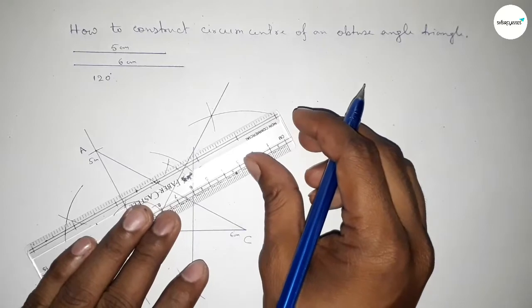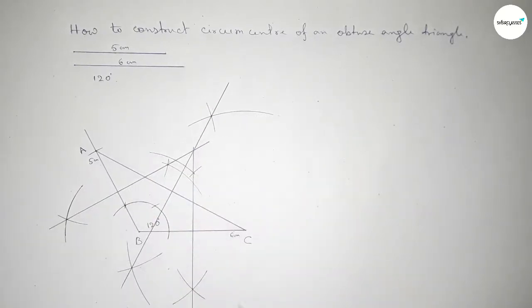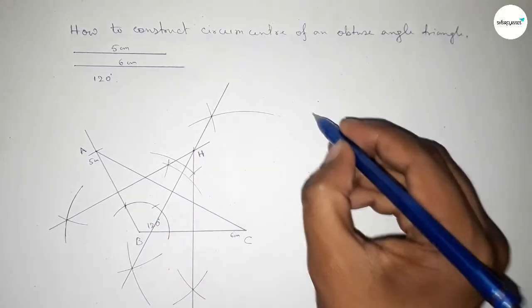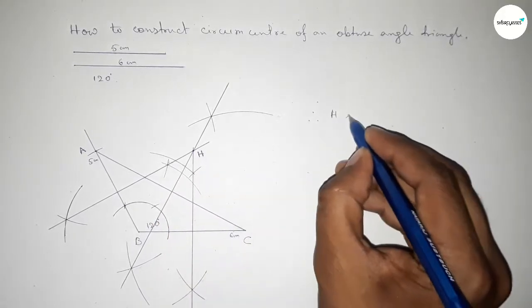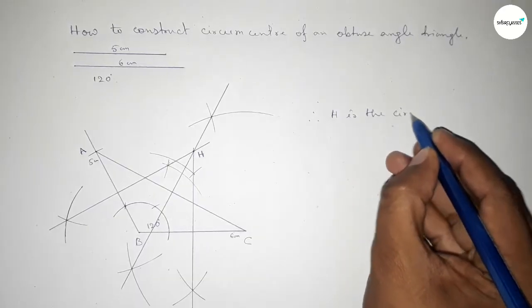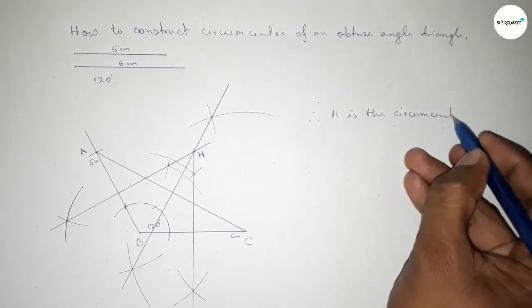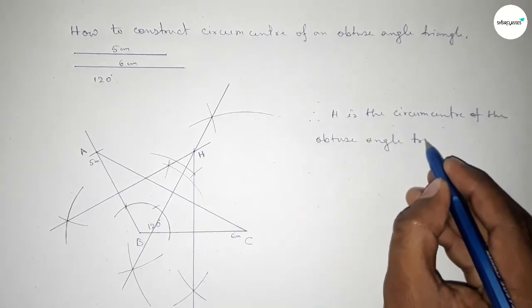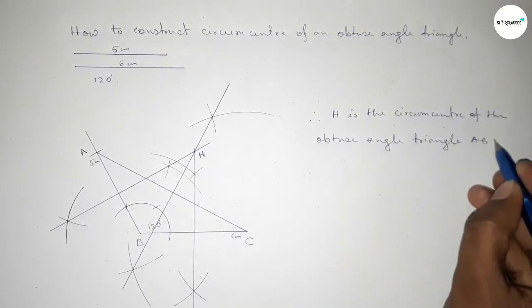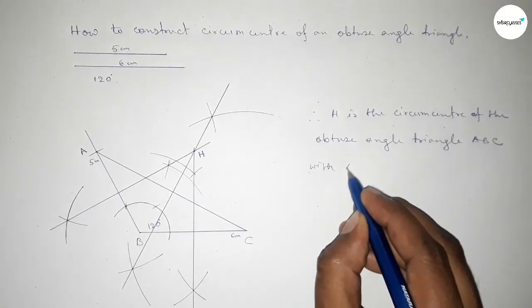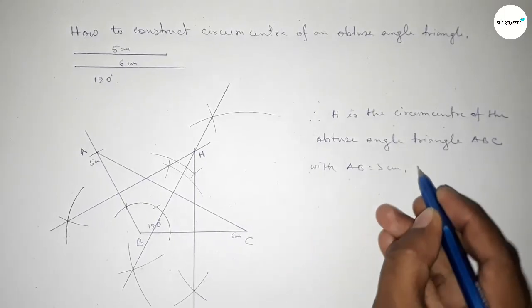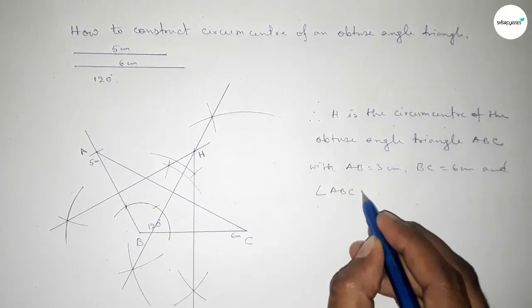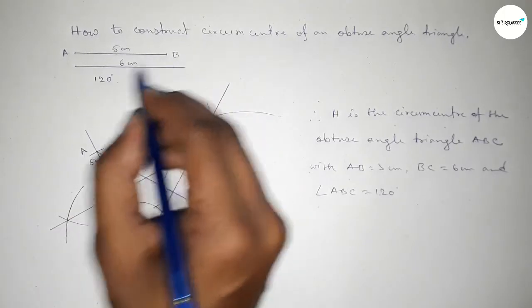The three bisectors intersect at a point H, which is on the outer side of the triangle. Therefore, H is the circumcenter of this obtuse angle triangle ABC, with AB equal to 5 centimeter, BC equal to 6 centimeter, and angle ABC equal to 120 degrees.